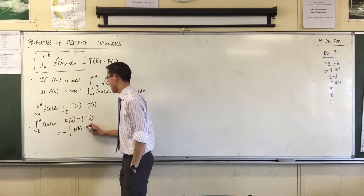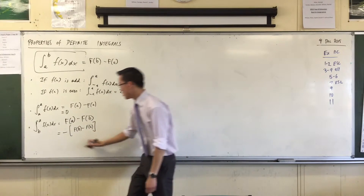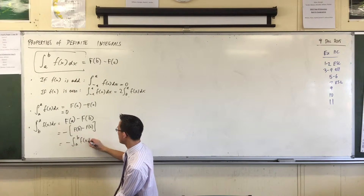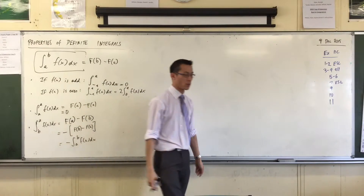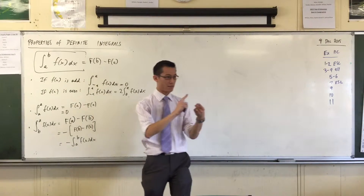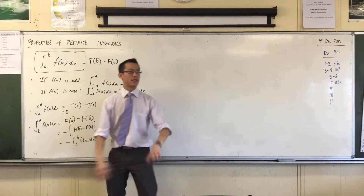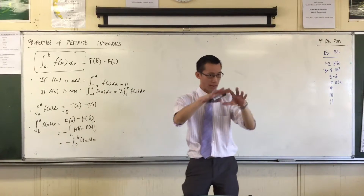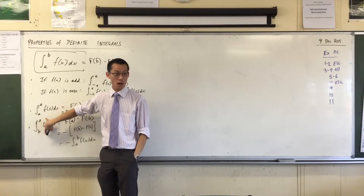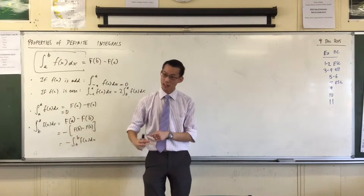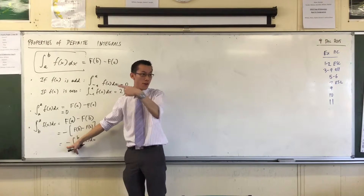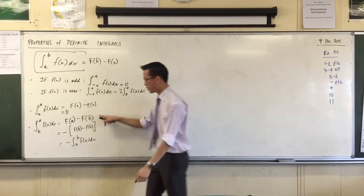So integrating from b to a gives you the negative of integrating from a to b. Remember, integrals are about total change — how much you've changed from here to here. Going in reverse is like going backwards in time. Rather than starting here and going forward, you go backwards, and the effect is that you reverse where you started from.